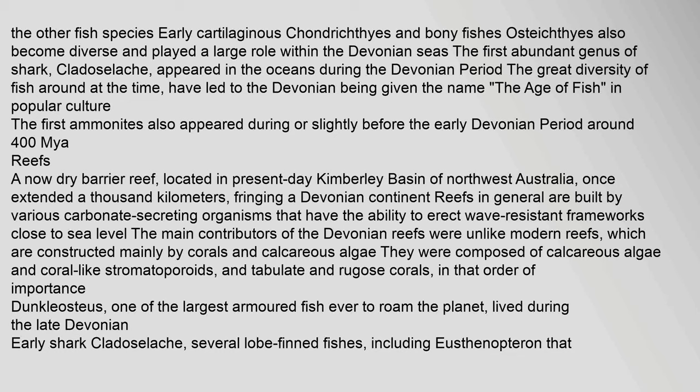The first ammonites also appeared during or slightly before the early Devonian period, around 400 Maya. A now-dry barrier reef, located in the present-day Kimberley Basin of Northwest Australia, once extended a thousand kilometres, fringing a Devonian continent. Reefs in general are built by various carbonate-secreting organisms that have the ability to erect wave-resistant frameworks close to sea level. The main contributors of the Devonian reefs were unlike modern reefs, which are constructed mainly by corals and calcareous algae — they were composed of calcareous algae and coral-like stromatoporoids, and tabulate and rugose corals, in that order of importance.